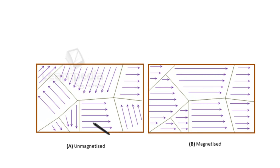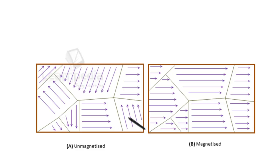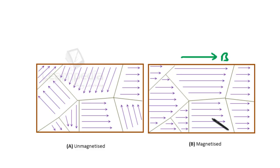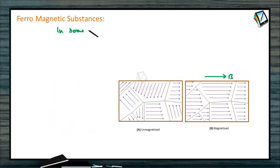In ferromagnetic substances, the permanent atomic magnetic moments have a strong tendency to align themselves even without an external field. These materials are called ferromagnetic materials. In every unmagnetized ferromagnetic material, the atoms form domains inside the material. Different domains, however, have different directions of magnetic moment, and hence the material remains unmagnetized. On applying an external field, these domains rotate and align in the direction of the magnetic field. Because of the domain character of ferromagnetic materials, even a small magnetic field gives rise to large magnetization, and the resultant magnetic field is much larger than the applied field.